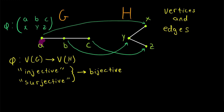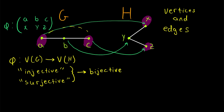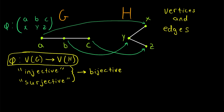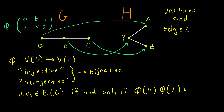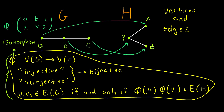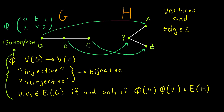We've taken care of matching up the vertices, but what about the edges? Here's the idea, and it's pretty simple. If two vertices in G are adjacent, then their corresponding vertices in H should also be adjacent. Similarly, if two vertices of G are not adjacent, then their corresponding vertices in H should also not be joined by an edge. Any two vertices V1 and V2 in G should be adjacent if and only if their corresponding vertices, phi of V1 and phi of V2, are also adjacent in H. And if a function like this exists, then they are isomorphic graphs, and this function is called an isomorphism.